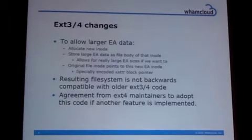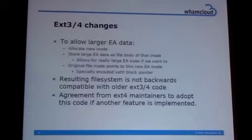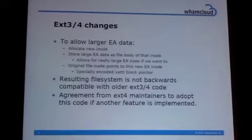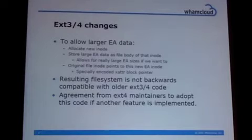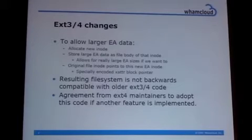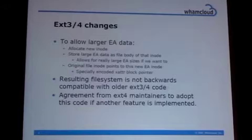Starting with EXT3 changes: right now, extended attributes can only be stored as a single block, and there is only a single block pointer from the EXT3 inode to store this information. There is no space to store multiple block pointers or anything like this. So it was decided that an additional inode would be allocated and we would store the extended attributes as part of the body of that inode. That would allow us to have huge extended attributes all the way up to the maximum possible file size. We will specially encode this inode number and put it into the block pointer in the original inode. This is totally incompatible with older file systems, and you can't go back once you start having such extended attributes.